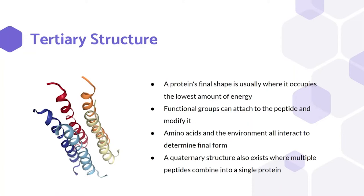A final quaternary structure does exist for some proteins. This is where multiple polypeptides combine to form a single protein. Hemoglobin, a protein for transporting oxygen in the blood, is an example of this.